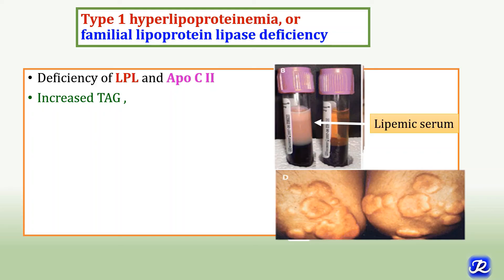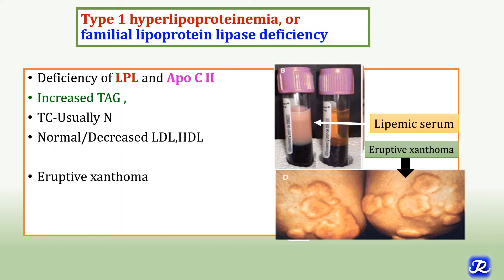Patients with Type 1 hyperlipoproteinemia have lipemic serum. Total cholesterol is usually normal, and LDL and HDL can be normal or decreased. The condition is characterized by eruptive xanthomas, which suddenly appear on the body, especially on the hands, buttocks, and extensor surfaces of extremities. These eruptive xanthomas are small yellowish-orange to reddish-brown pebbles associated with increased triacylglycerol levels. The condition is also associated with pancreatitis but is not associated with atherosclerosis.